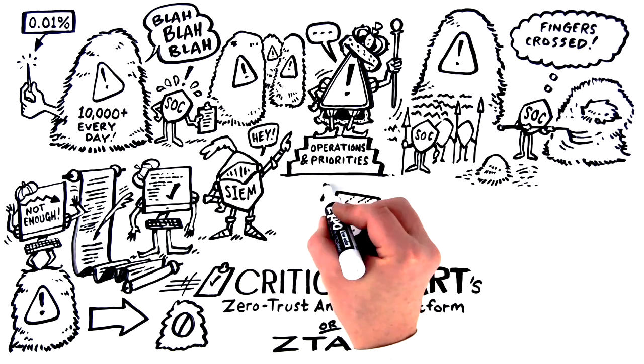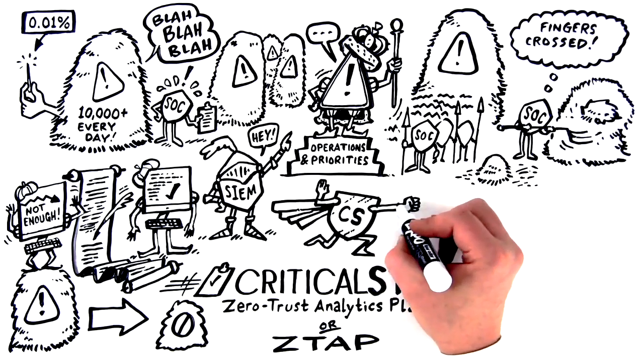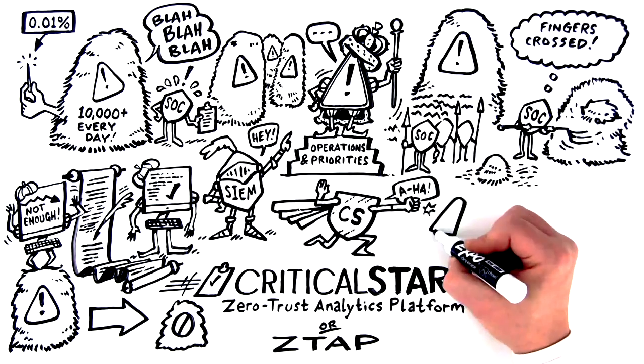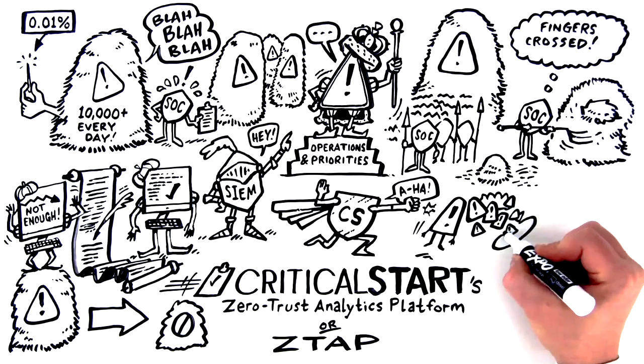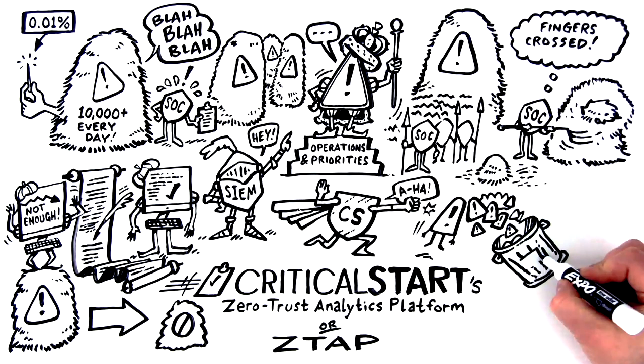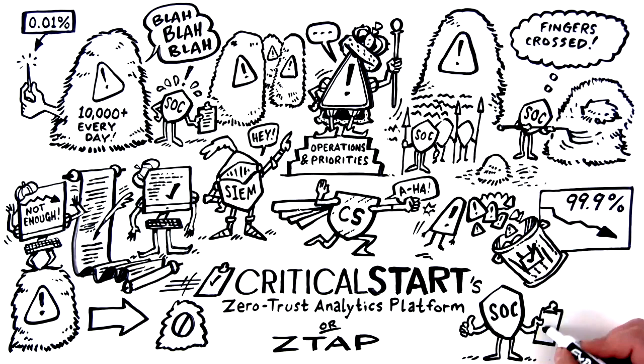Critical Start uses broad, locally-specified data processing techniques to automatically identify and remove benign or known good alerts, and can reduce the number of alerts requiring investigation by 99.9%, meaning SOCs can deliver tighter security while also preserving their internal resources.